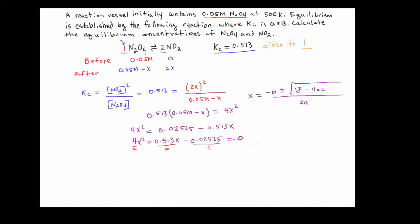So plugging in, my x will be equal to minus 0.513 plus or minus square root. Hopefully, we can squeeze it all in here. Let's see, so we have 0.513 and this quantity is squared minus 4 times 4 minus 0.02565. And the whole thing is over 2 times 4.